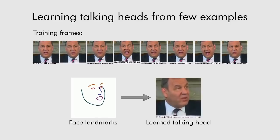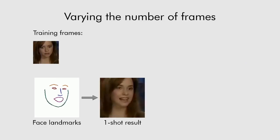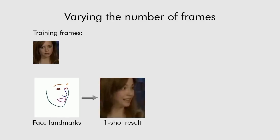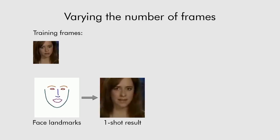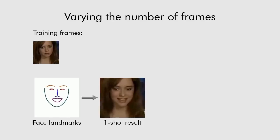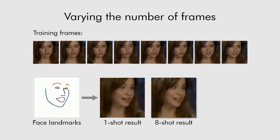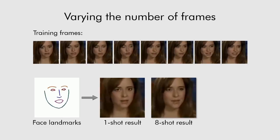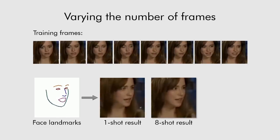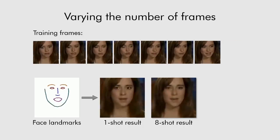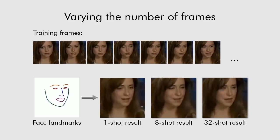As shown here, our system can learn from different numbers of frames. One-shot learning from a single frame is possible. Of course, increasing the number of frames leads to head models of higher realism and better identity preservation.